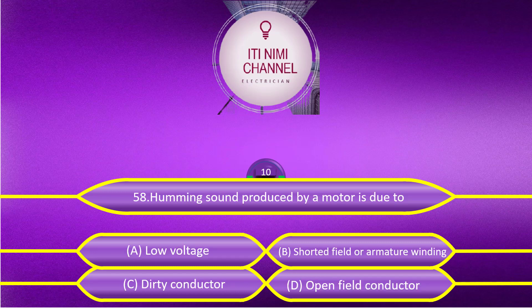Humming sound produced by a motor is due to: Option A, low voltage. Option B, shorted field or armature winding. Option C, dirty conductor. Option D, open field conductor. The answer is Option D: open field conductor.